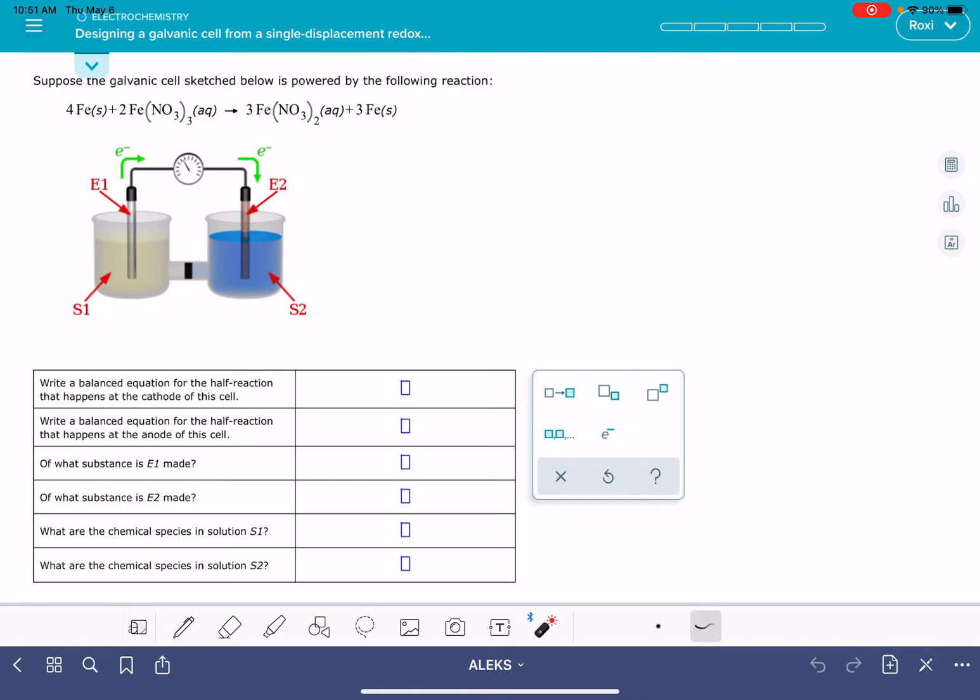In this video, I'm going to walk you through Alex's problem designing a galvanic cell from a single displacement redox reaction. For this problem, we're given a redox reaction and a diagram of a galvanic cell, and then we're asked to answer some questions about the composition of the cell.